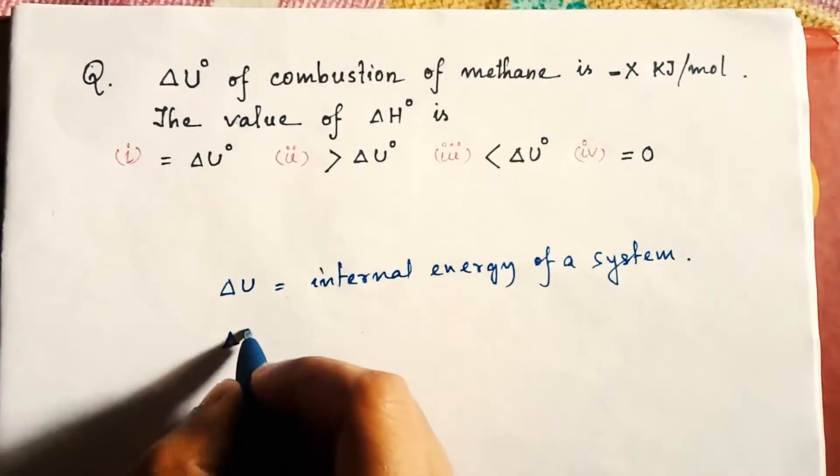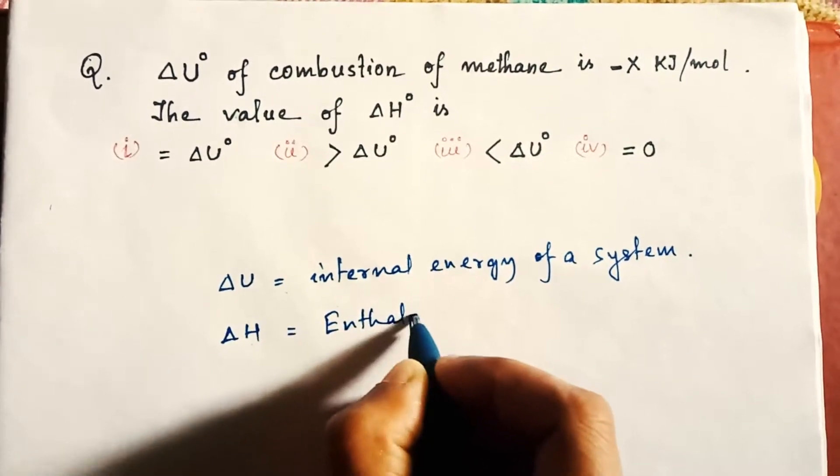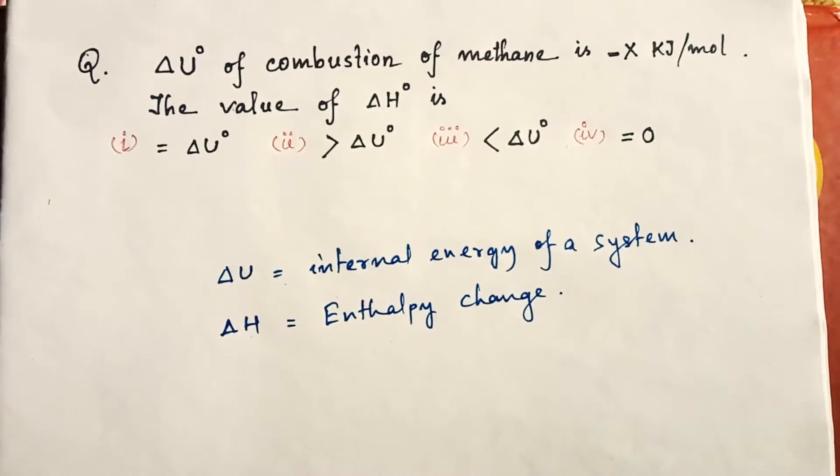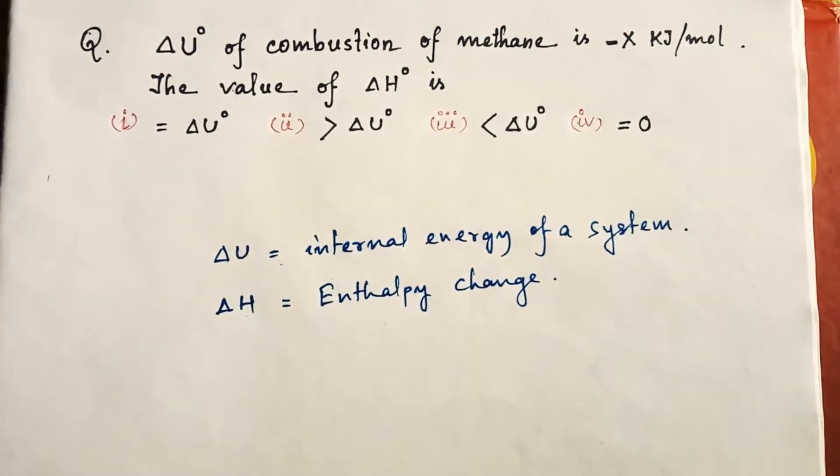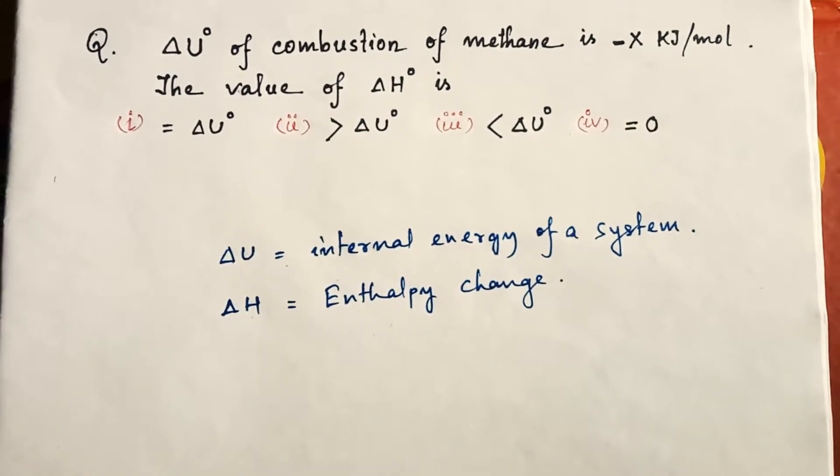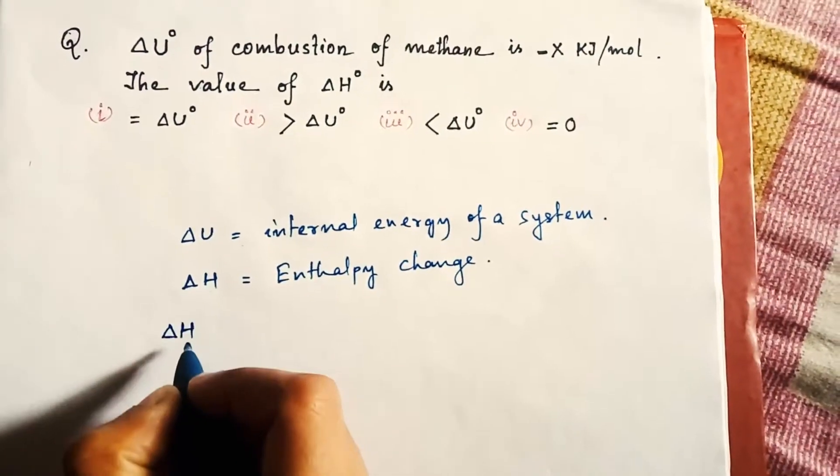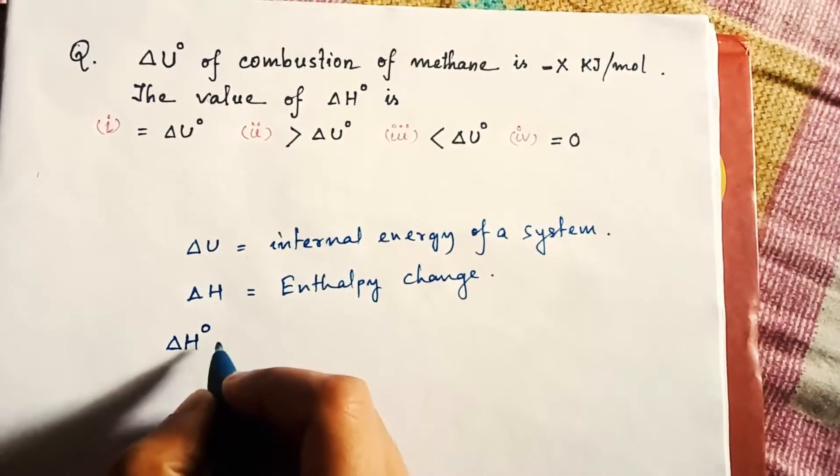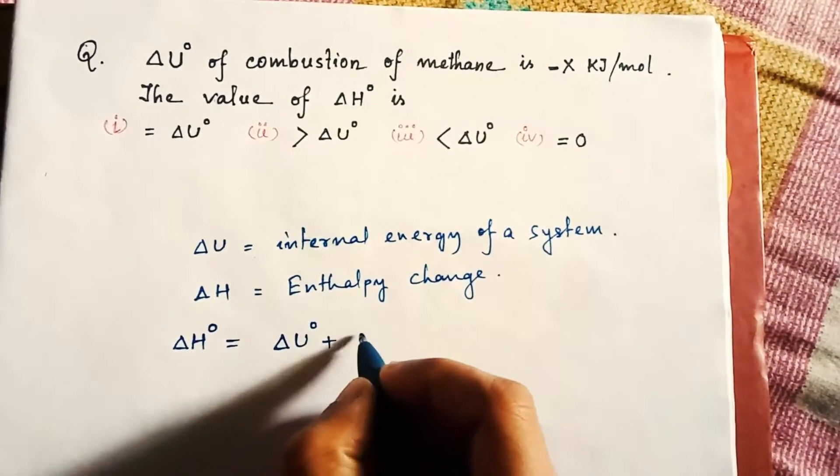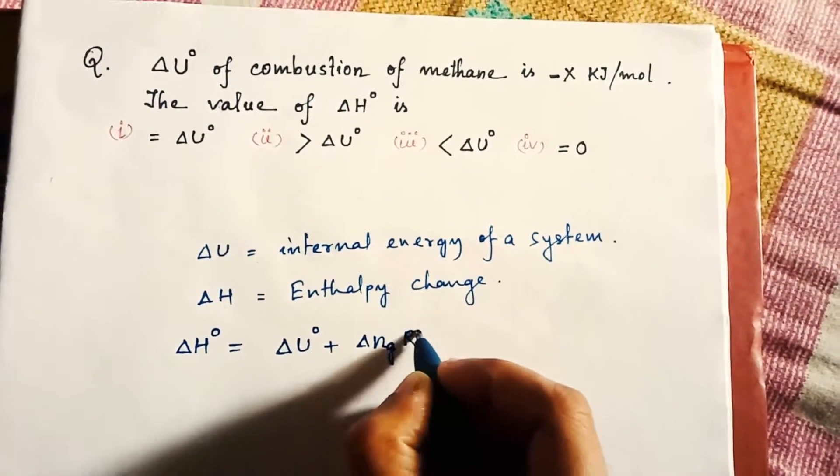And ΔH means enthalpy change. Now there is a formula where both the ΔU and ΔH is present. So the formula is ΔH° = ΔU° + ΔngRT.